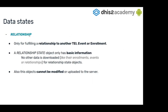We also have another state: the relationship state. The SDK only uses this state for fulfilling a relationship to another tracked entity instance or enrollment, and this only contains basic information of that relationship — like main properties such as the code, the name, display name, and last updated. It has nothing like enrollments, events, or other relationships, and it cannot be modified. It's just data that is there for fulfilling the relationship.